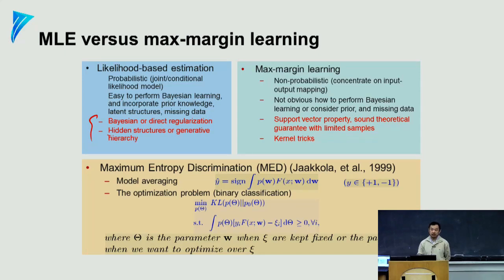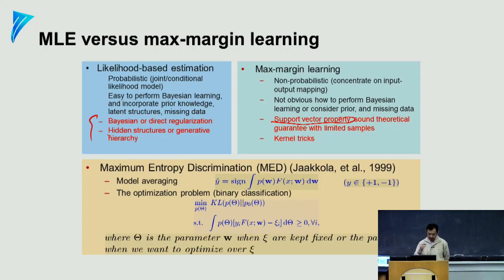SVM by definition does not allow hidden variables, because it is not a probabilistic formalism — it is a pure optimization-theoretic formalism. You only define a loss function on the data that you see, so it's a supervised learning problem. But the advantage is the support vector property, which gives a very good guarantee on generalizability because your decision boundary relies on fewer data points. And it allows the kernel trick, which is very nice.